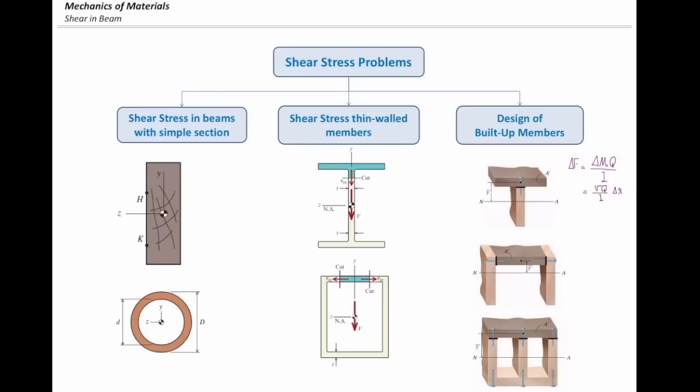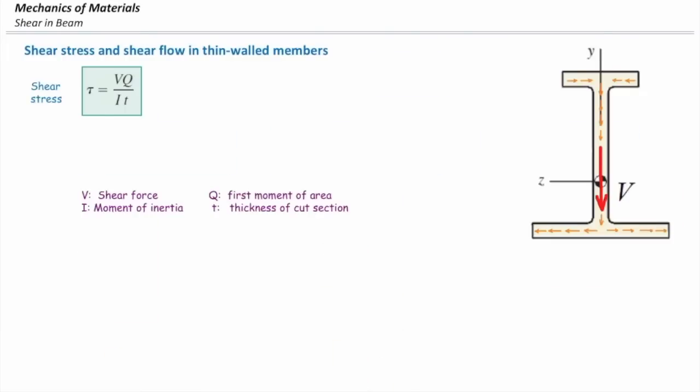So now let me focus on thin-walled elements. In thin-walled elements, the basic equation is VQ over IT. That equation gives us the value of shear stress at a certain point. V is shear force, I is moment of inertia, Q is the first moment of area, and T is the thickness of the cut section.